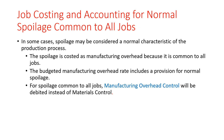In some cases, spoilage may be considered a normal characteristic of the production process. The spoilage is costed as manufacturing overhead because it is common to all jobs. The budgeted manufacturing overhead rate includes a provision for normal spoilage. For spoilage common to all jobs, manufacturing overhead control will be debited instead of materials control.